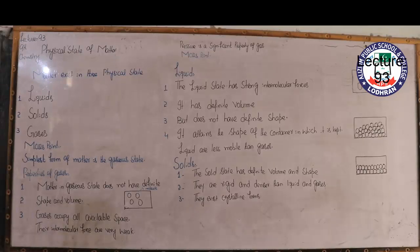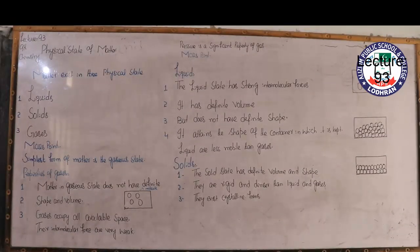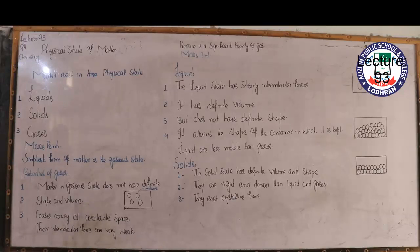Today we will discuss the next chapter which relates to physical states of matter, chapter number 5. You have studied it in previous classes but we will explain it again so that you can revisit your previous knowledge. First of all, let's discuss physical states of matter.